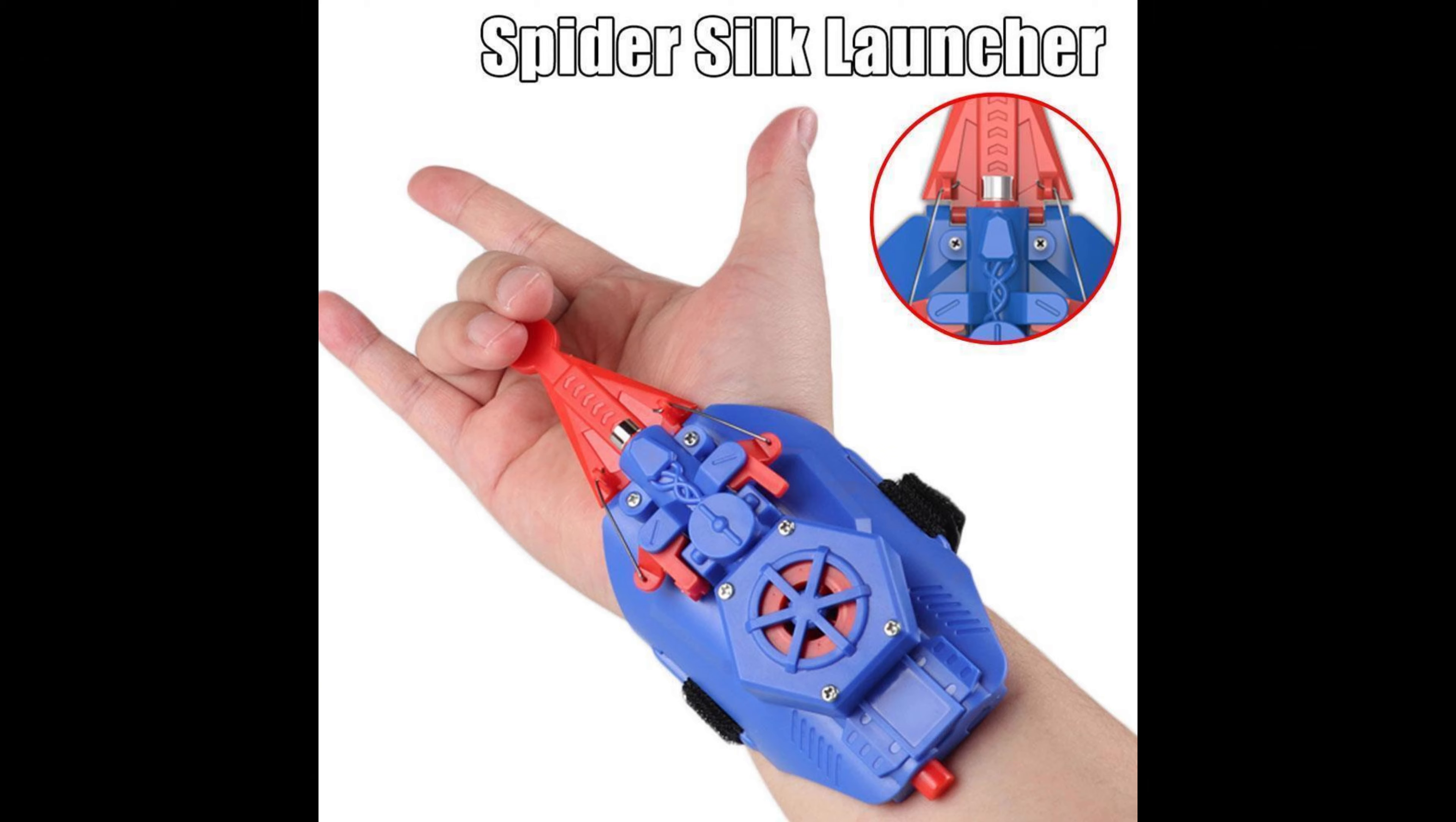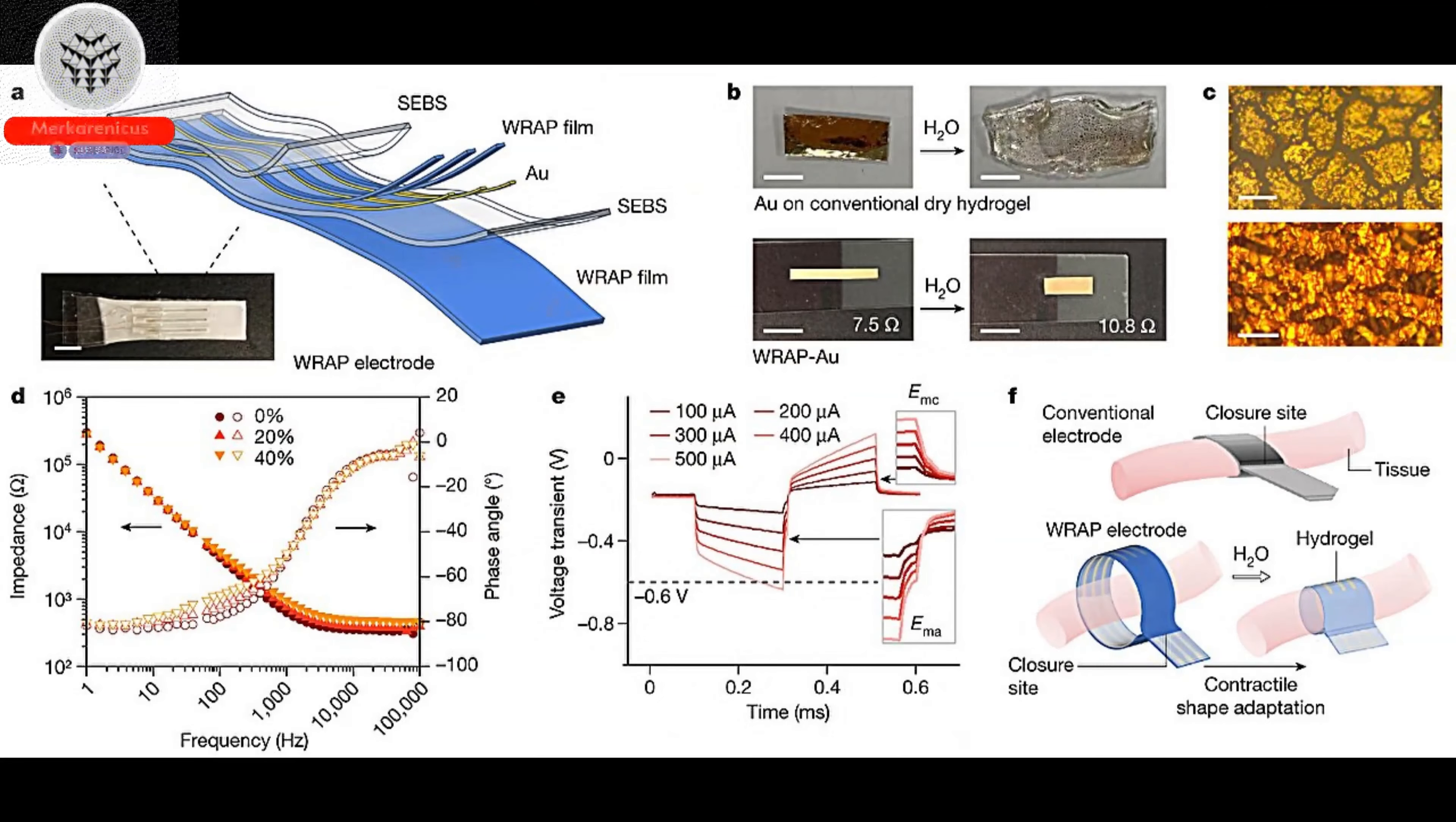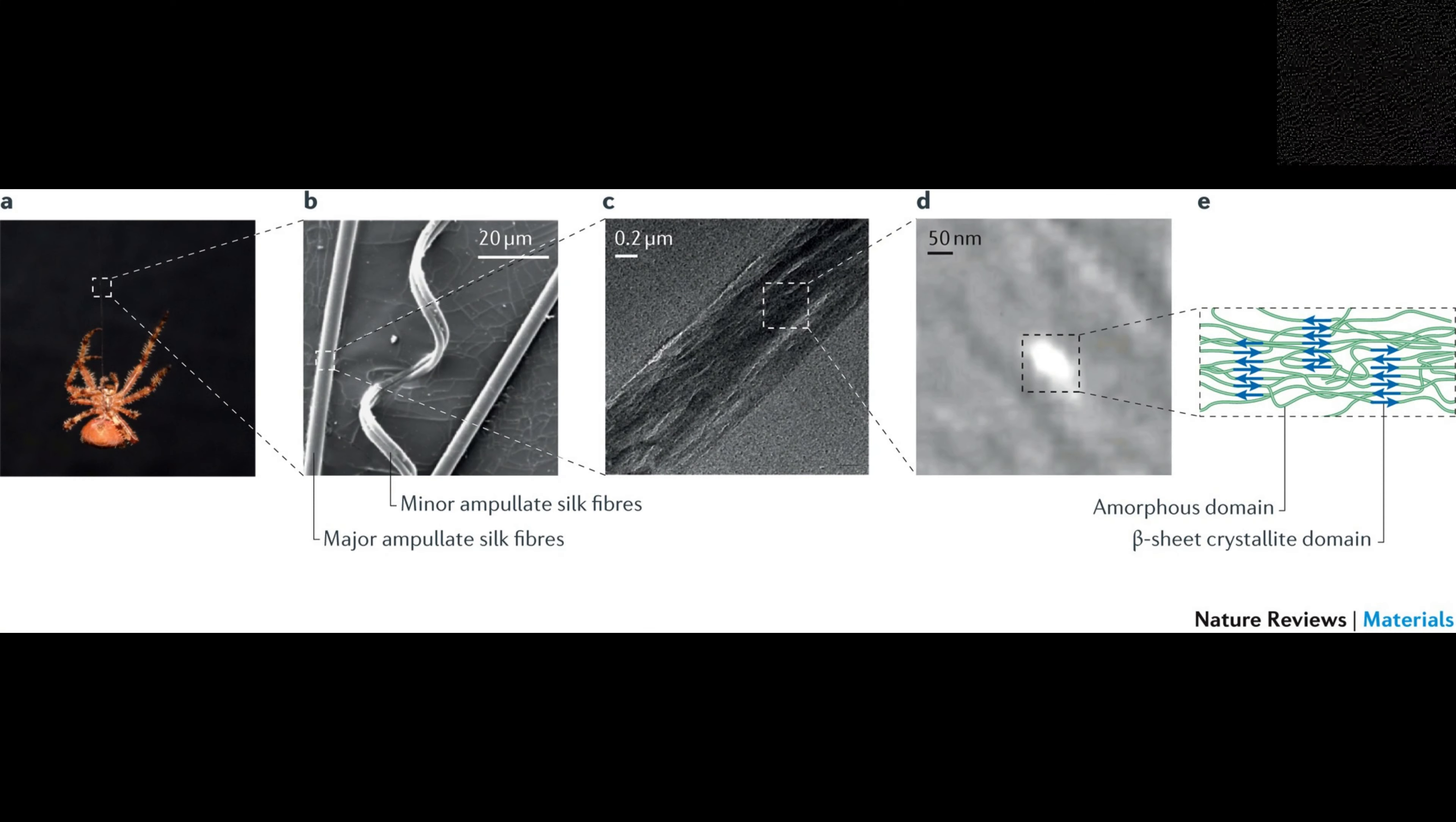However, it should be noted that this approach may yield thicker devices that have the potential to disrupt regular functionality. On the other hand, the utilisation of spinning electronic fibres can create imperceptible devices for users, but these may lack the necessary sensitivity and complexity. Additionally, the process of transferring these devices onto the desired object can prove to be challenging.